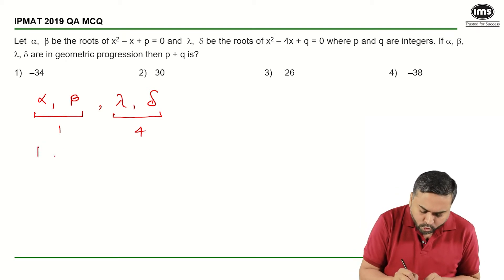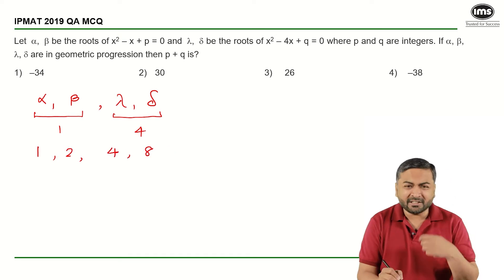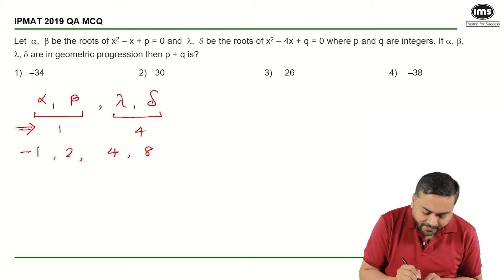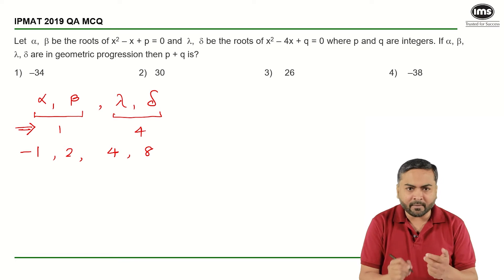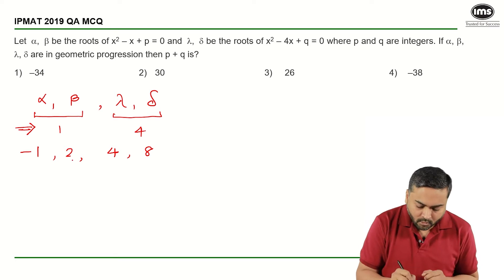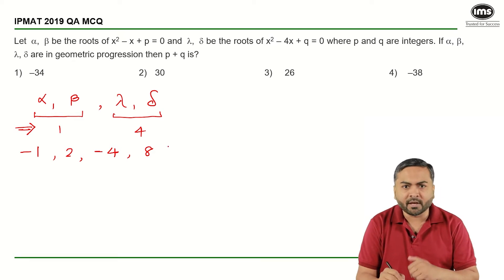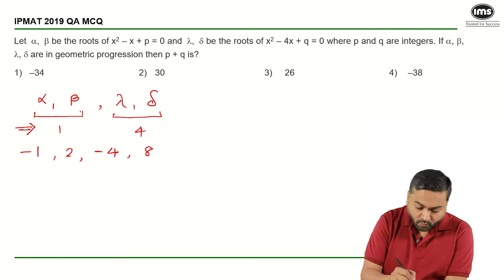If I assume the roots to be 1, 2, 4, 8, it does not satisfy the sum to be 1 and sum to be 4. But what if the common ratio is minus 2? Starting with minus 1, then 2, then minus 4, and 8. We have achieved this.